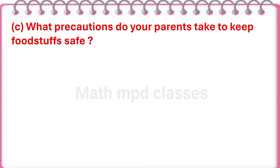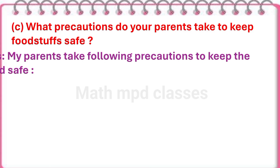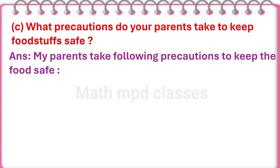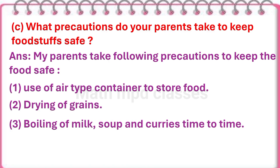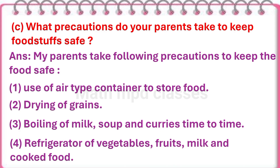Question no. 3: What precautions do your parents take to keep the foodstuff safe? Answer: My parents take the following precautions to keep the foodstuff safe. First, use of airtight containers to store the food. Second, drying of grains. Third, boiling of milk, soup and curries from time to time. Next, refrigeration of vegetables, fruits, milk and cooked food.